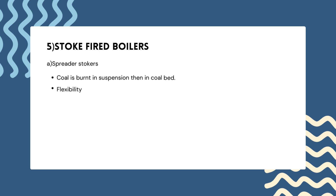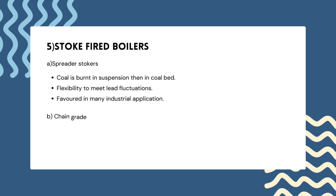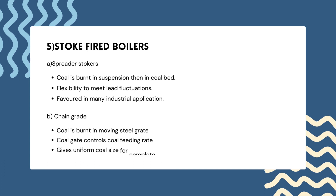Stoker fired boilers include two types. The first is the spreader stoker, where coal is first burned in suspension and then in the coal bed, offering flexibility to meet fluctuations and used in both suspension and grate burning. The second is the chain grate or travelling grate stoker, where coal is burned in a moving steel grate. A coal gate controls the coal feeding rate, giving uniform coal size for complete combustion.